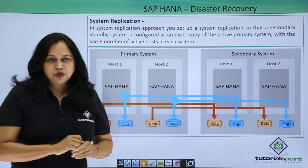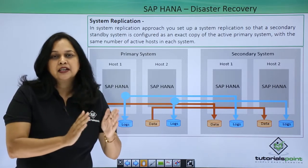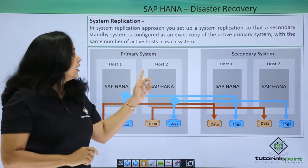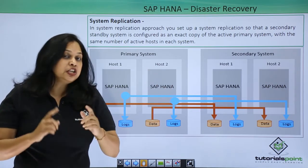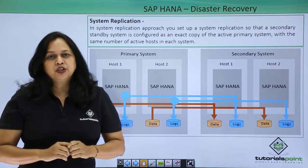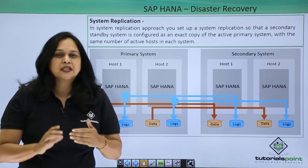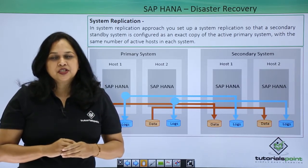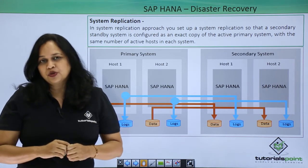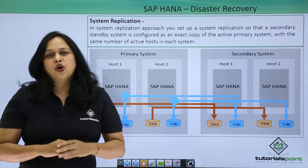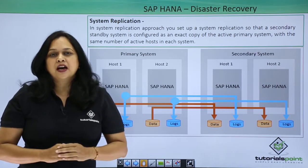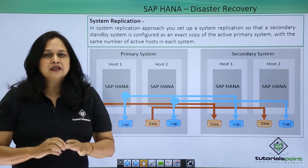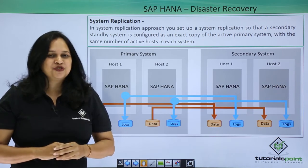In a system replication approach, you set up a secondary standby system configured as an exact copy of the active primary system, with the same number of active hosts in each system, though the number of standby hosts need not be the same. With multi-tier system replication, you have one primary system and can have multiple secondary systems. When the secondary system is started in recovery mode, each service component establishes a connection with its counterpart and requests a snapshot of the data in the primary system. After that, all logged changes in the primary system are replicated — whenever logs are persisted in the primary system, they are also sent to the secondary system. A transaction in the primary system is not committed until the logs are replicated.